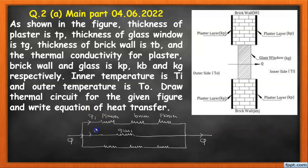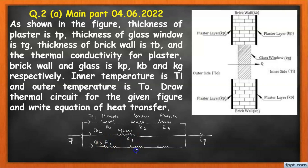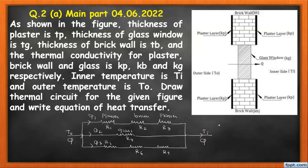The heat passing through each branch is q1, q2, and q3. The resistances are labeled R1, R2, R3 for the first branch, R4 for the second branch (glass), and R5, R6, R7 for the third branch. The outside temperature is To and the inside temperature is Ti.